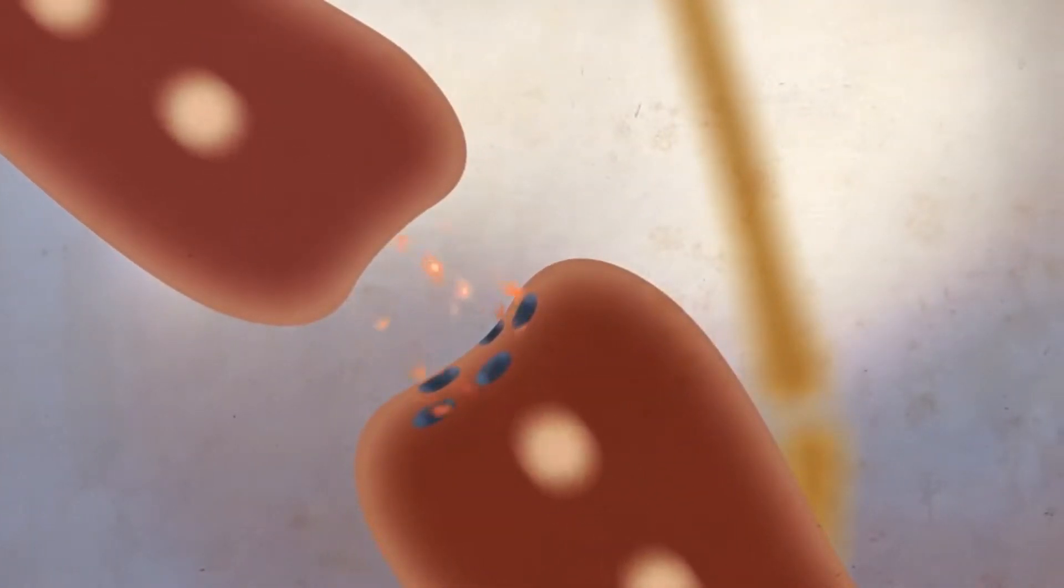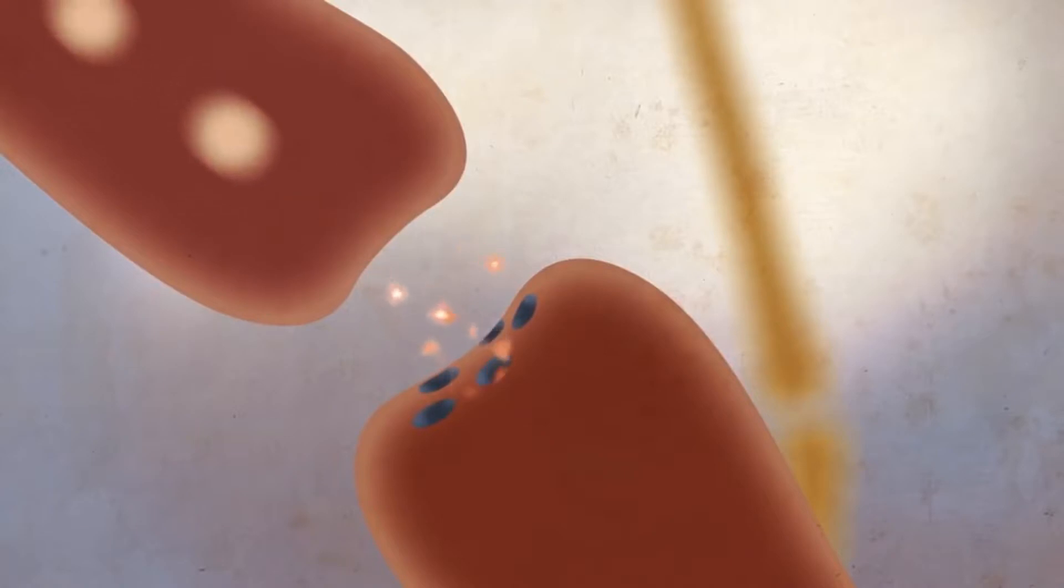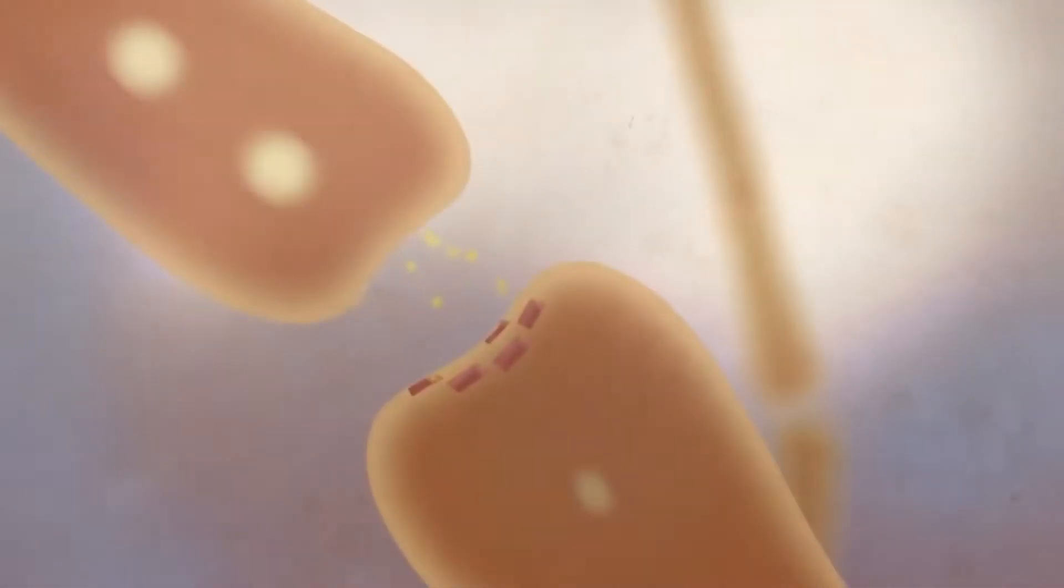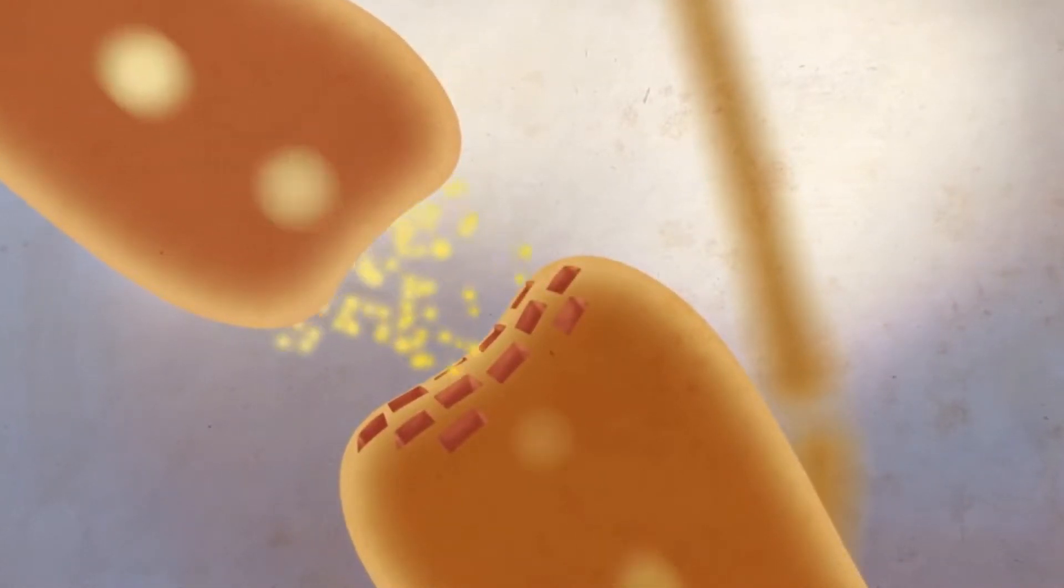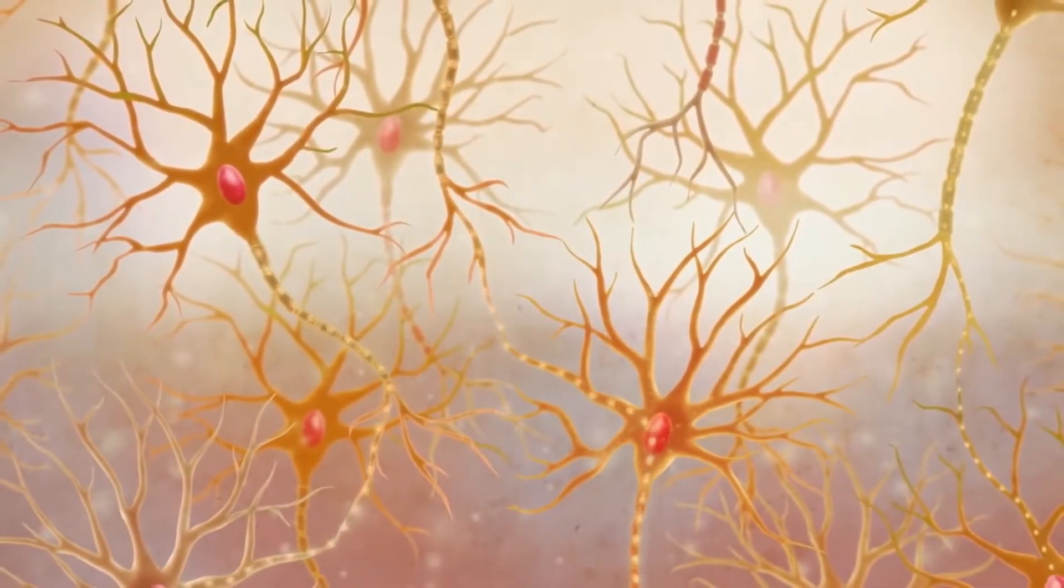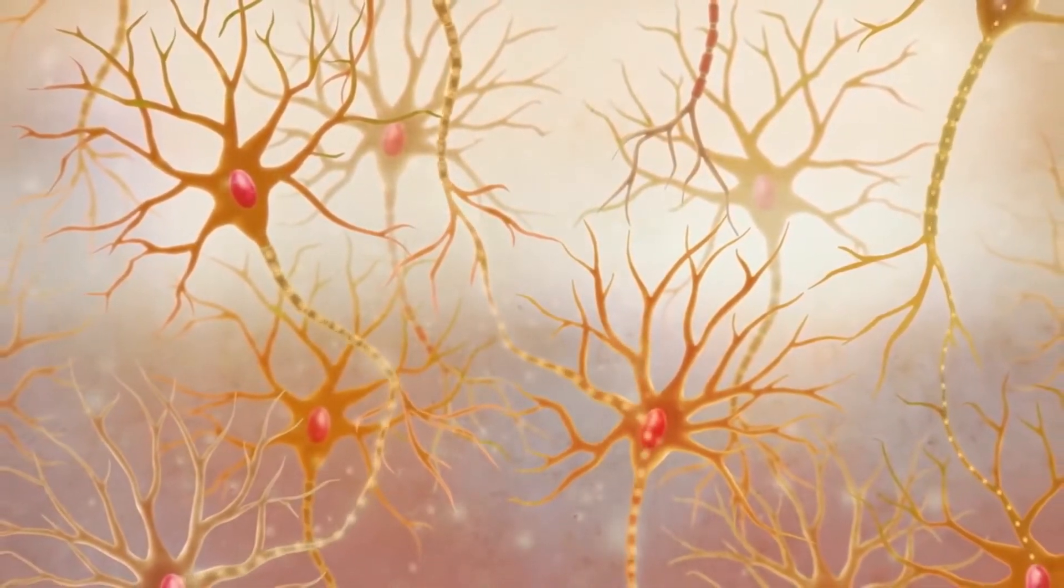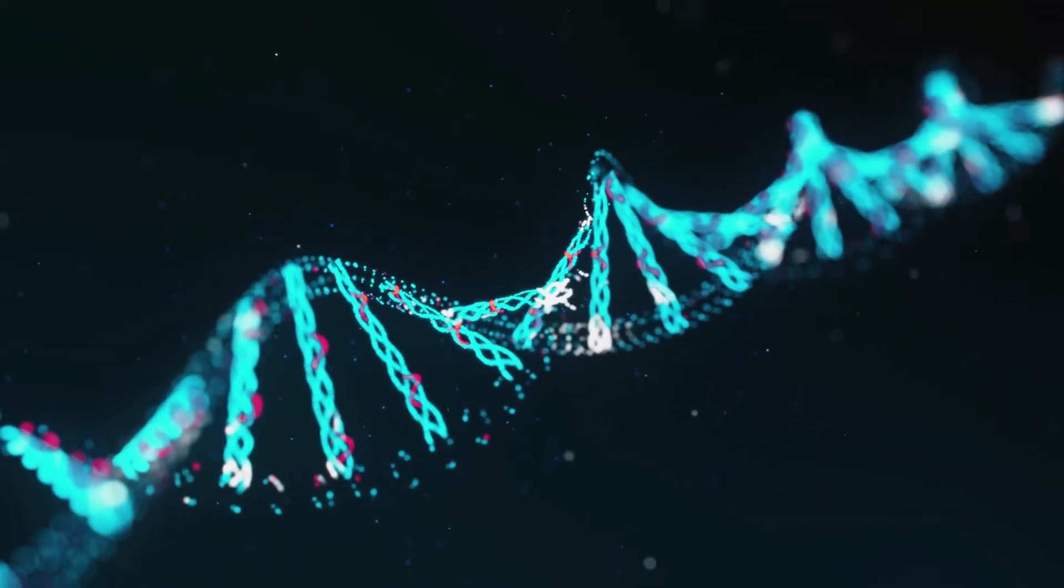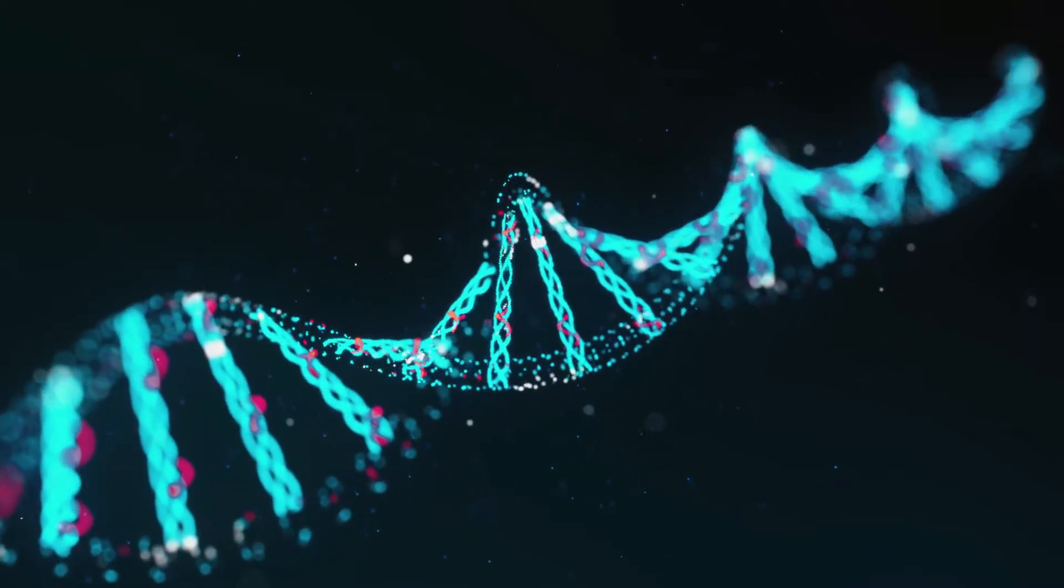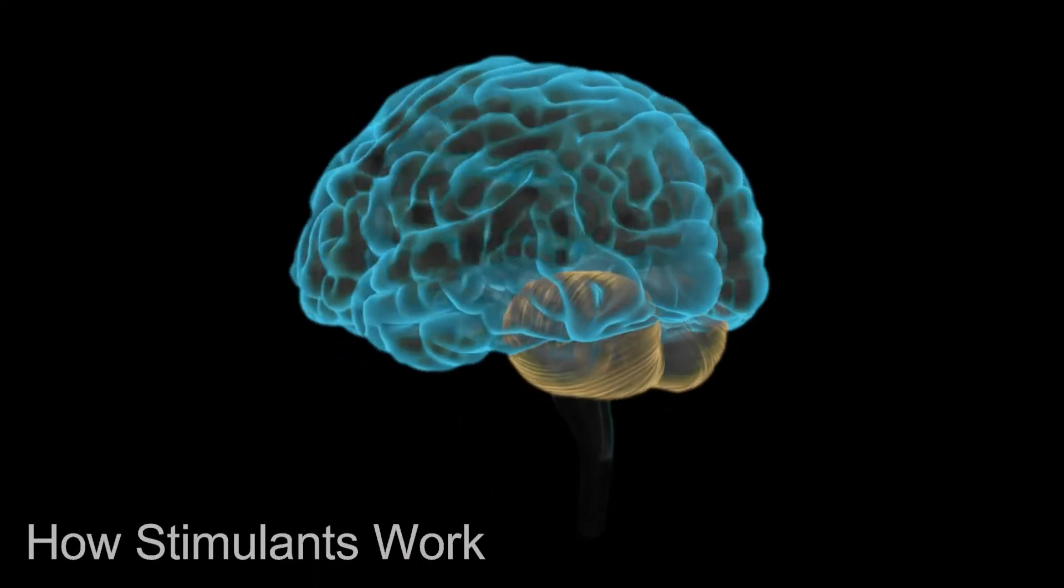After the neurotransmitter is released, the excess portion is then reabsorbed by the neuron that produced it. What sometimes seems to happen in individuals with ADHD is the neurotransmitter is prematurely absorbed back into the neuron. When this occurs, that portion of the neural network can't relay messages in an adequate and timely way.